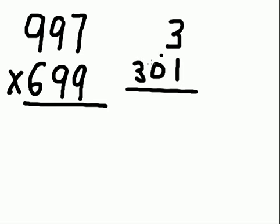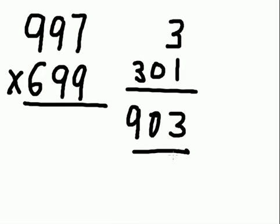How much is 3 times 301? Three times one is three, three times zero is zero, and three times three is nine. Well, congratulations! We now have the last three digits for our answer.